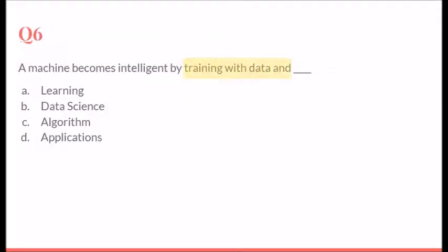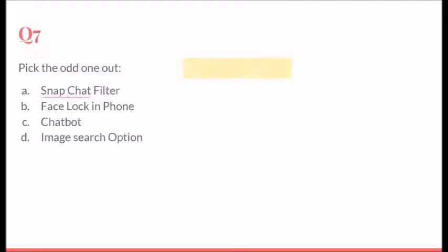Let's see the next question here. To pick the odd one out, we have Snapchat filter, we have face lock in iPhone, we have chatbot, and the last is image search options. The chatbot is the one which is the odd one out of the four options available to us.